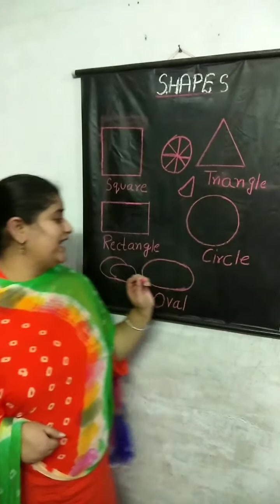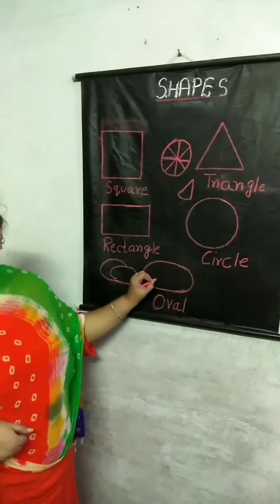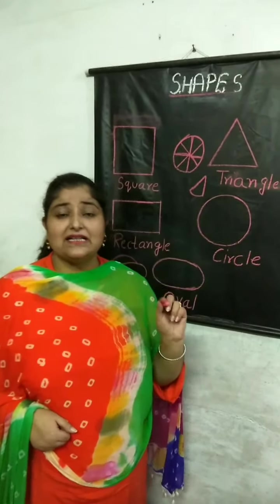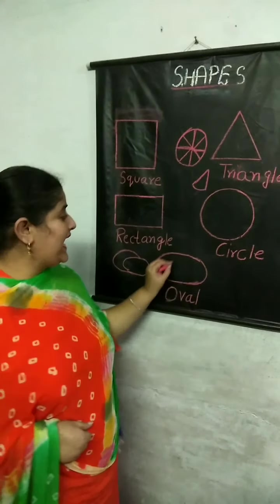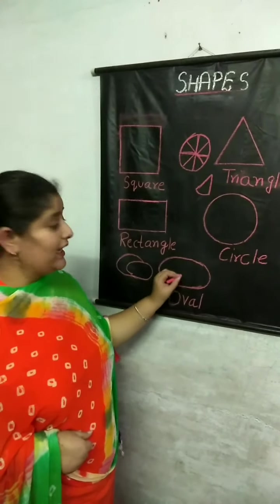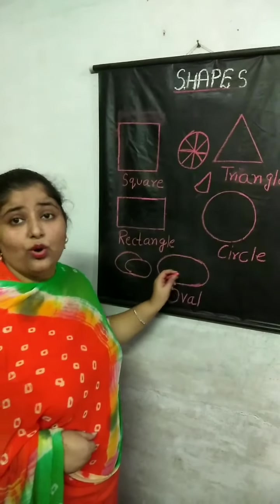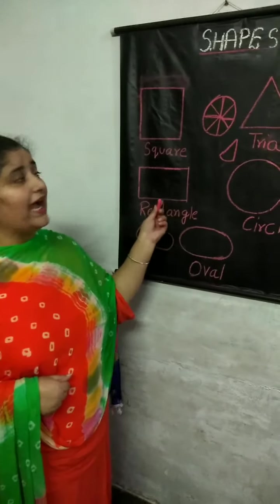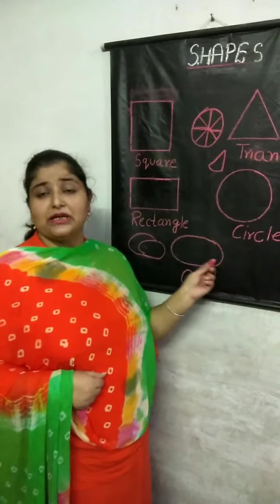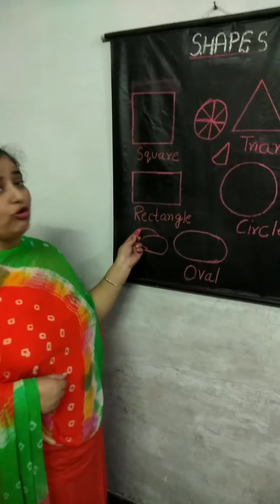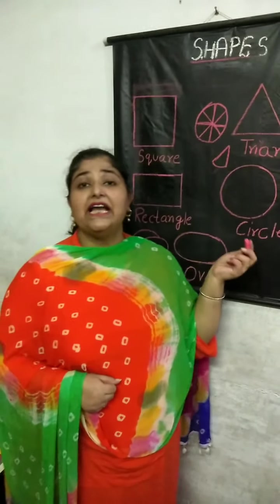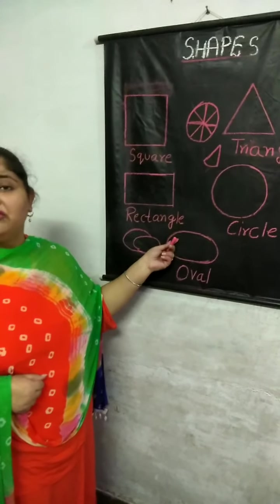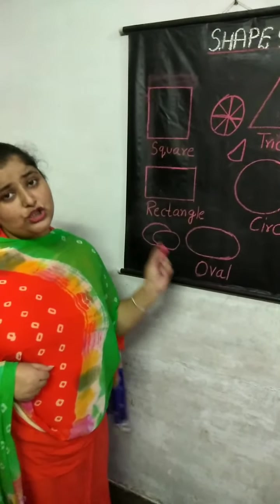Now, the last shape is oval. You all love to eat egg — an egg is oval in shape. This egg doesn't have any corners and lines. I hope this lesson is very much clear to you, and you can draw these shapes in your copy.